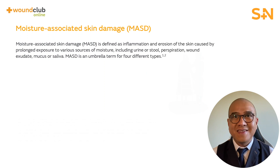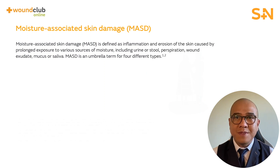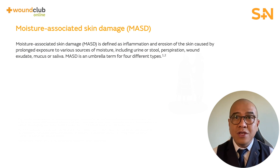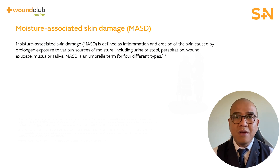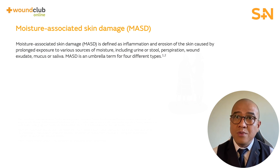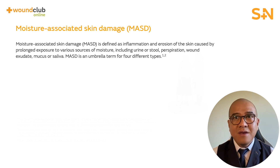Moisture-associated skin damage is an umbrella term for the four types of MASD. It is defined as the inflammation and erosion of the skin caused by prolonged exposure to various sources of moisture — that includes urine or stool, perspiration, wound exudate, mucus or saliva.